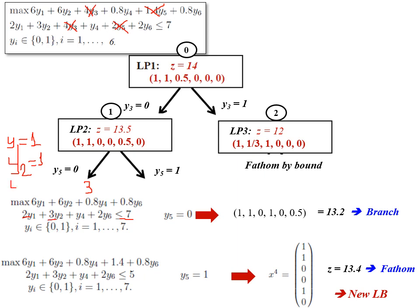Next I try y6: six plus two equals eight, which is not less than or equal to seven. The remaining capacity is seven minus six equals one unit, and the weight of y6 is two units, so y6 equals one over two equals 0.5.